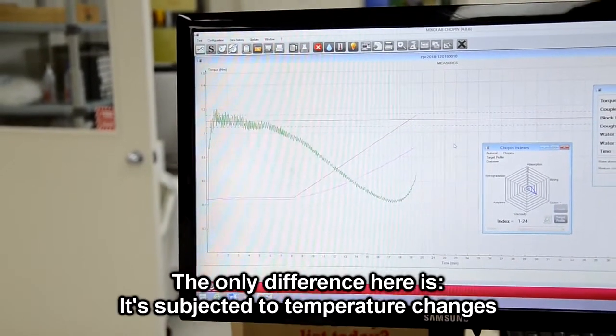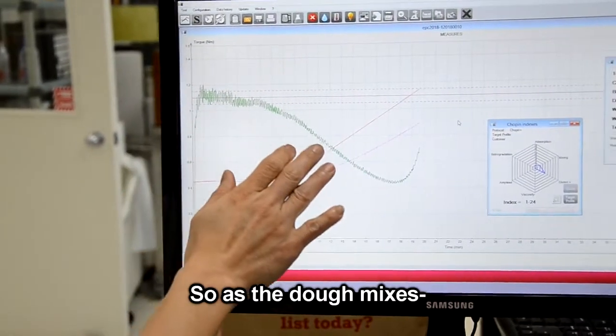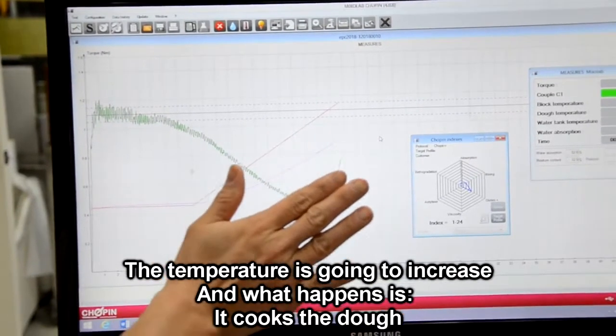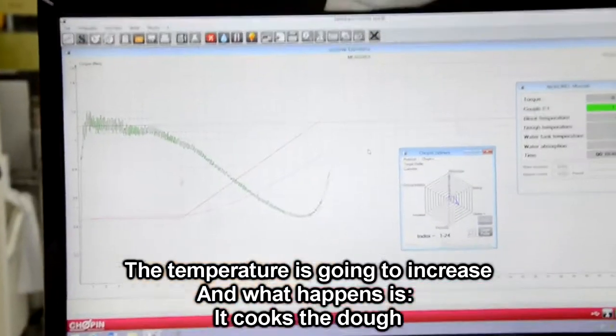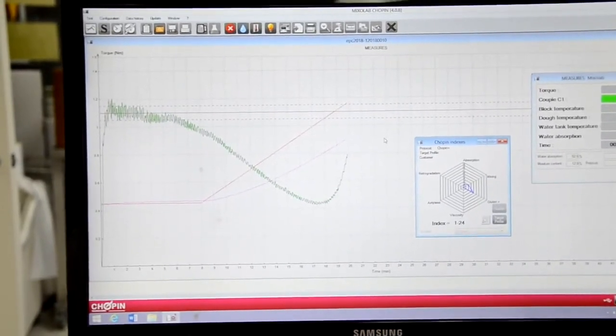The only difference here is it's subjected to temperature changes. So as the dough mixes until 8-9 minutes, the temperature is going to increase. And what happens is it cooks the dough. So you're in the middle of a test right now, and we will talk about the graph when it's done.